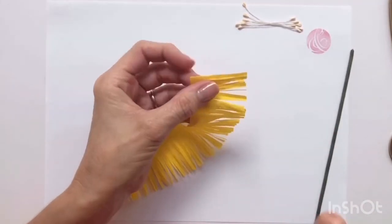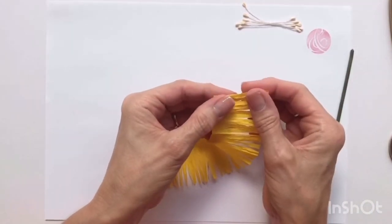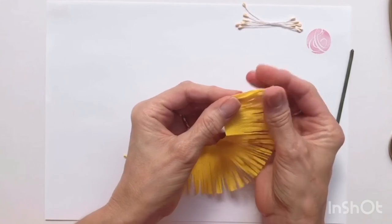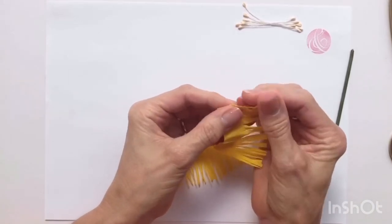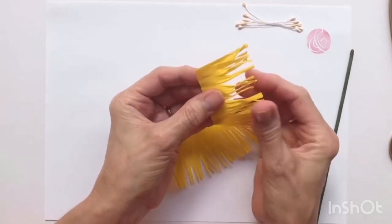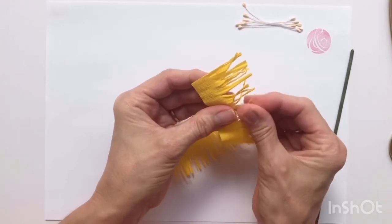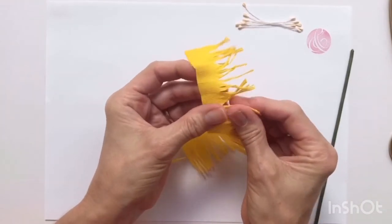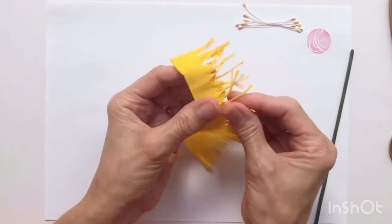And then what you want to do is take the fronds and just rub them between your fingers. The paper's quite strong, it shouldn't rip. This just makes them nice and bendy and twisted in the middle, not quite so uniform.